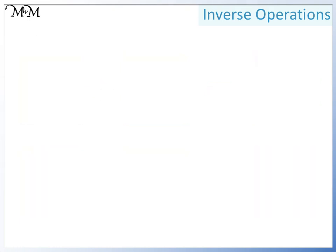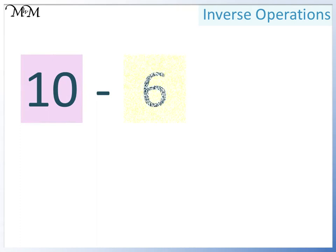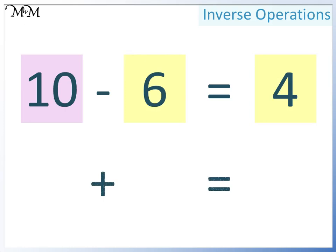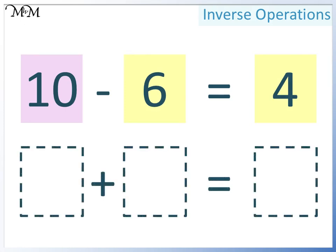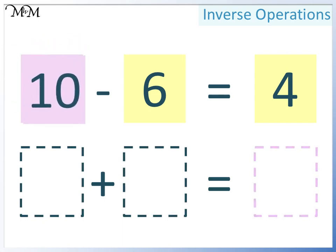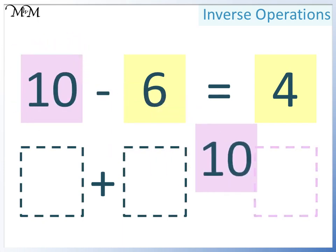Here is another example: 10 take away 6 equals 4. A larger number take away a smaller number leaves another smaller number. We want to change this into an addition, where two smaller numbers add together to make a larger number. Our biggest number is 10, so 10 must go here.